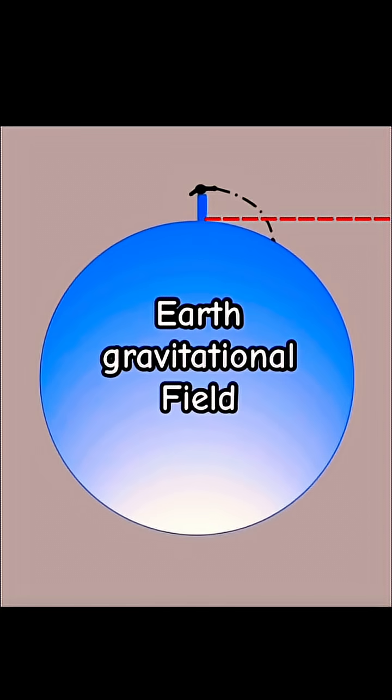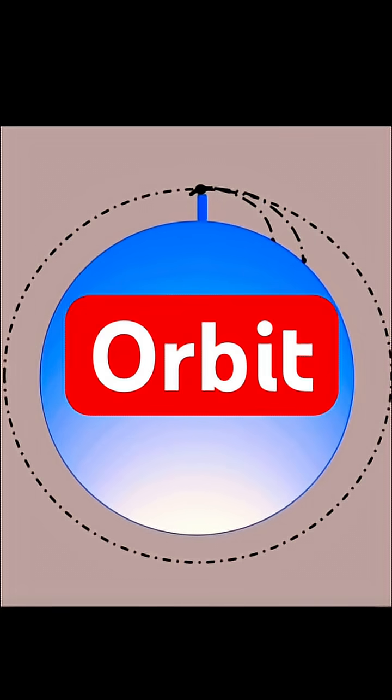So if we launch at a high speed, we can see the track. Even faster and it goes further. Get the right speed and we balance the inertia of the object with the gravitational force. What do we get? An orbit.